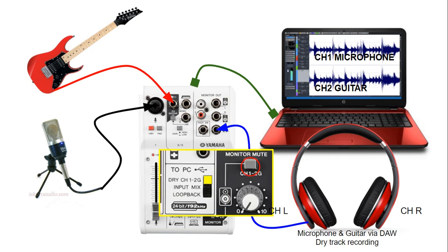To make things easy while recording, there is a monitor mute button that when pressed mutes the speakers connected to the Yamaha AG-03. That way we can track our vocals and guitar without feedback from the speakers, but we are still able to listen to them on our headphones right in the center.